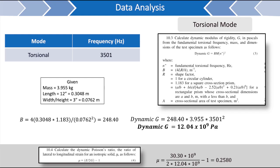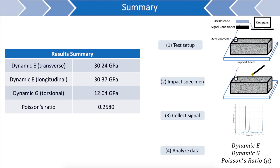The Poisson's ratio of the specimen can then also be estimated by utilizing the previous dynamic modulus of elasticity and rigidity values. This Poisson's ratio was found to be approximately 0.258. To summarize the results from this test: the dynamic modulus of elasticity found by utilizing the transverse and longitudinal frequencies were very close at 30.24 GPa and 30.37 GPa respectively. The dynamic modulus of rigidity determined by measuring the fundamental torsional frequency was found to be 12.04 GPa, and the Poisson's ratio is approximately 0.258.